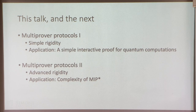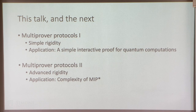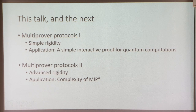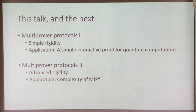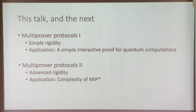This talk is broken into two parts. In this first hour, I'll talk about a simple example of rigidity and show how, as an application, it can be used to give a very simple interactive proof for quantum computation — illustrating the techniques and ideas that go into thinking about multi-prover protocols. In the second half, I'll talk about more advanced examples of rigidity and show how they lead to applications to the complexity of MIP*.